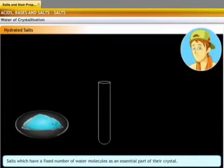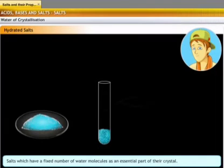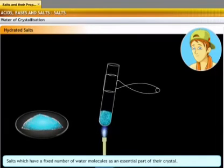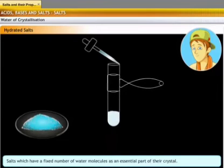Let us perform a simple experiment to verify the presence of water molecules in copper sulfate. Take some powdered copper sulfate in a test tube. Hold the test tube with a pair of tongs and heat it using a Bunsen burner. Observe that the blue colored copper sulfate turns white. When this powder is moistened with water, the blue color reappears.